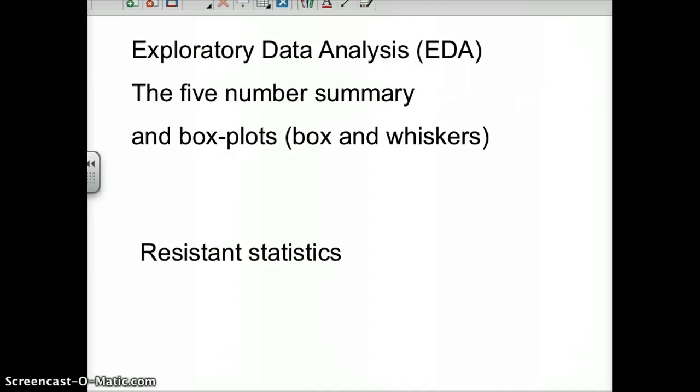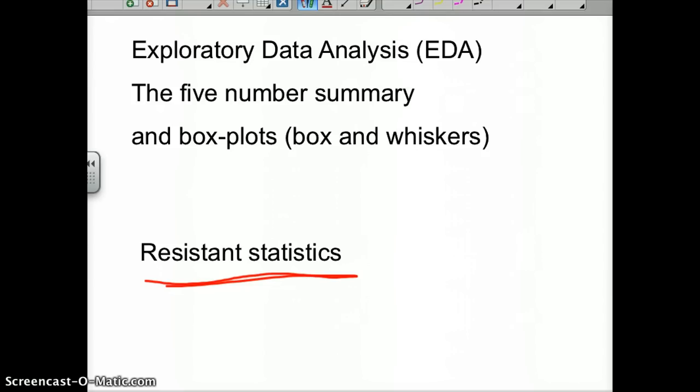What I mean by resistant statistics is that outliers don't affect our summary as much. The five-number summary mainly deals with median and quartiles or percentiles, so these aren't as affected by a huge outlier. Whereas mean and variance are affected pretty heavily by an outlier. Rather than sit here and yammer about it, let's just look at it.